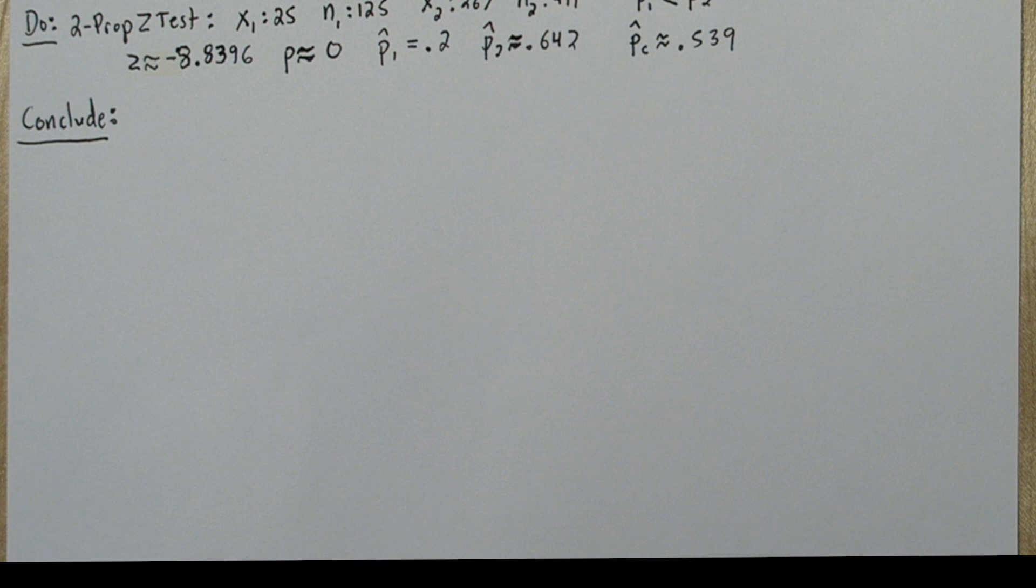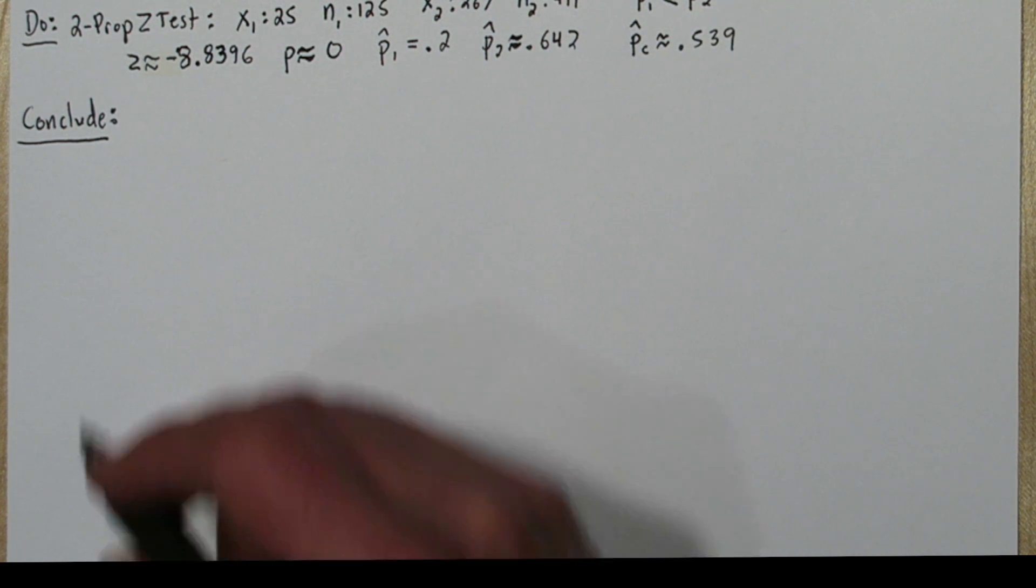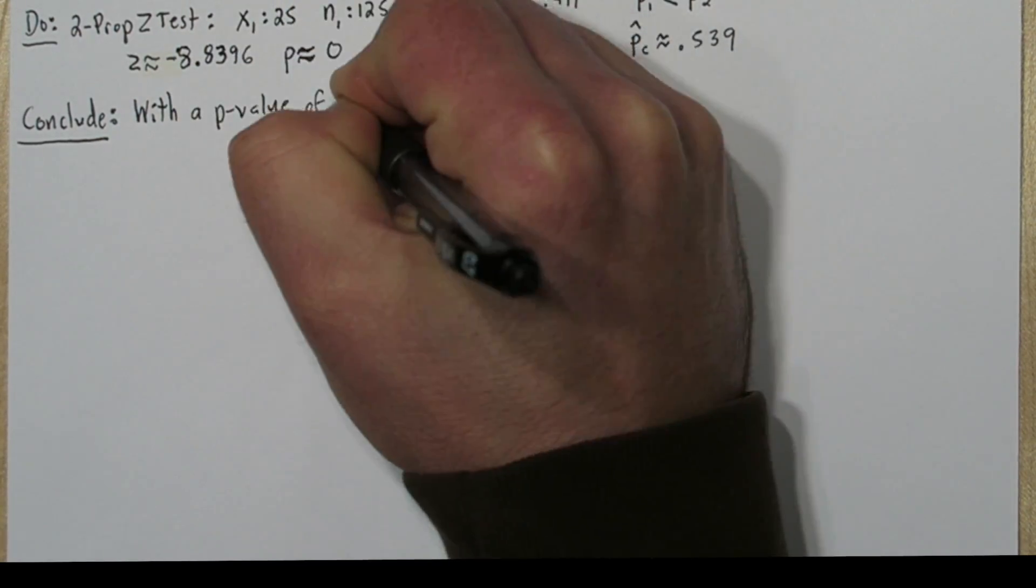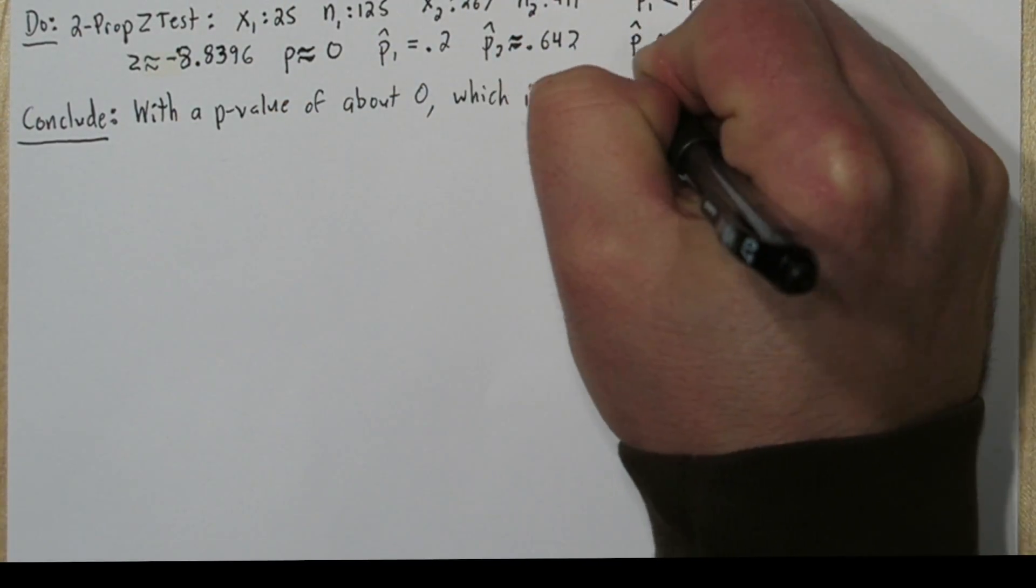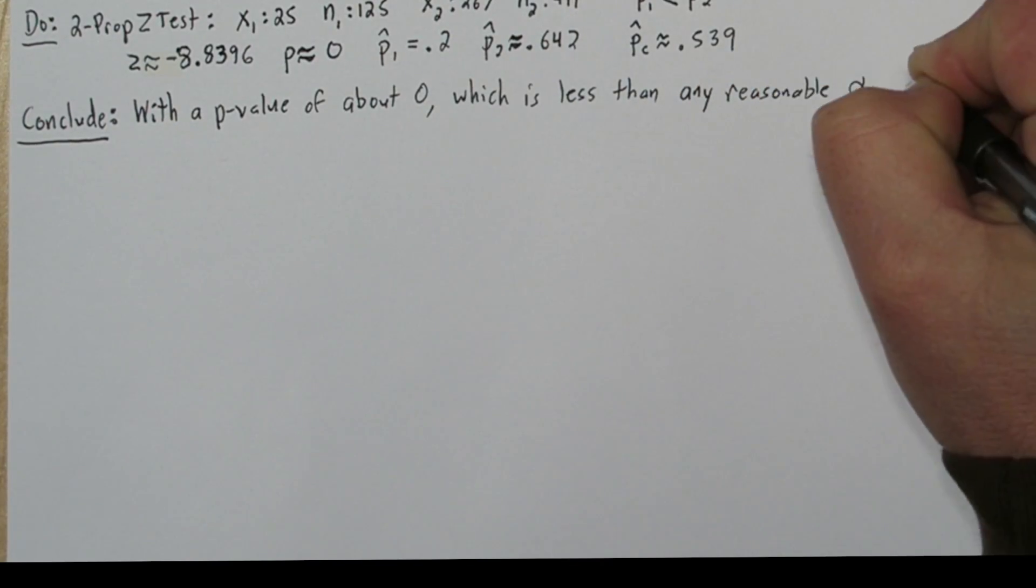In fact, anytime you have a p-value that's very, very, very close to 0, I recommend not stating that there's significant evidence to reject the null hypothesis. I think you should say there's overwhelming evidence to reject the null hypothesis.